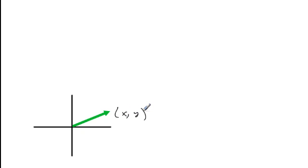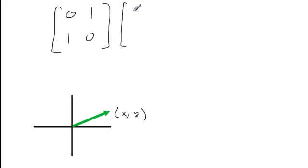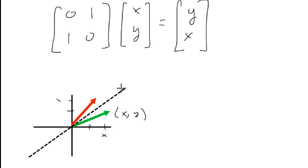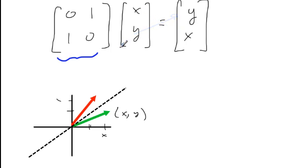Let's take a different example. Again I have my vector x, y, but this time the matrix is [0, 1, 1, 0]. If I multiply it by x, y, I get 0x + y = y for the first coordinate, and x + 0y = x for the second coordinate. So the x-coordinate becomes my y-coordinate and the y-coordinate becomes my x-coordinate. This transformation turns out to be a reflection. When I switch the x and y-coordinates, the effect is to reflect over the line y equals x.